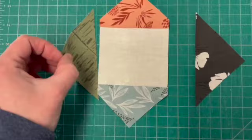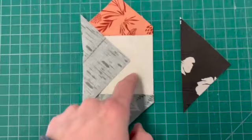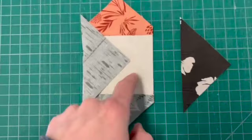So what I'm gonna do is line those two up right sides together and I will sew that seam and I'll do the same thing on the other side. So that is how we do step two of this block.